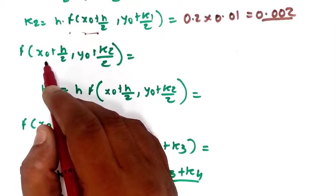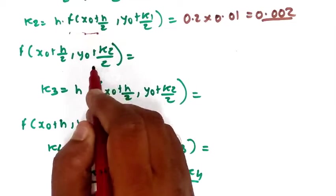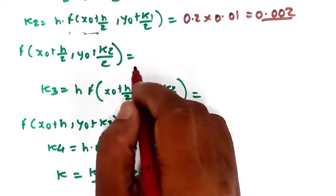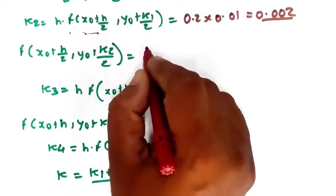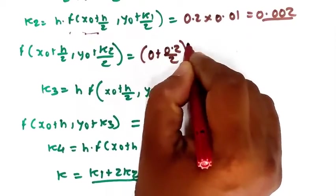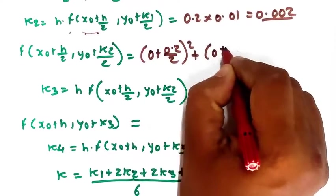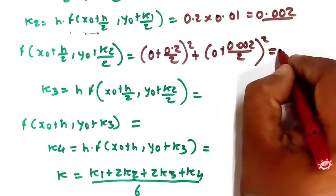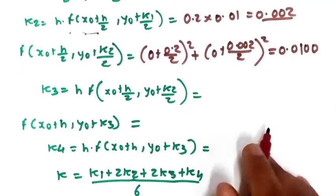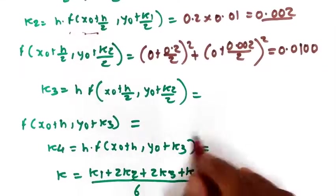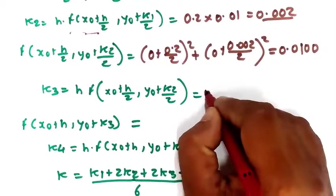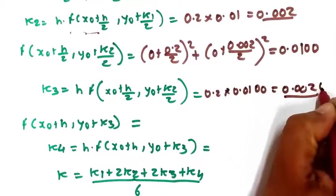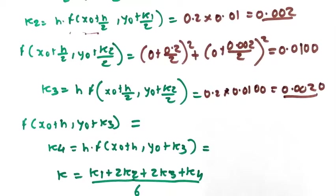Similarly, find k3. The formula uses x0 + h/2 and y0 + k2/2. Substituting: (0 + 0.1)² + (0 + 0.002/2)² ≈ 0.0100. Multiplying by h: k3 = 0.2 × 0.0100 = 0.002.